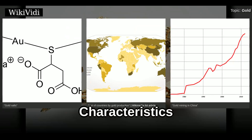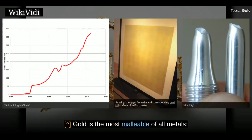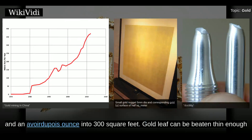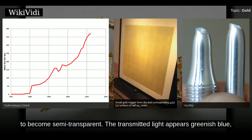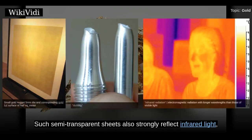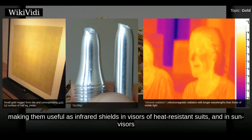Gold is the most malleable of all metals. A single gram can be beaten into a sheet of one square meter, and an avoirdupois ounce into 300 square feet. Gold leaf can be beaten thin enough to become semi-transparent. The transmitted light appears greenish-blue, because gold strongly reflects yellow and red. Such semi-transparent sheets also strongly reflect infrared light, making them useful as infrared shields in visors of heat-resistant suits and in sun visors for spacesuits.